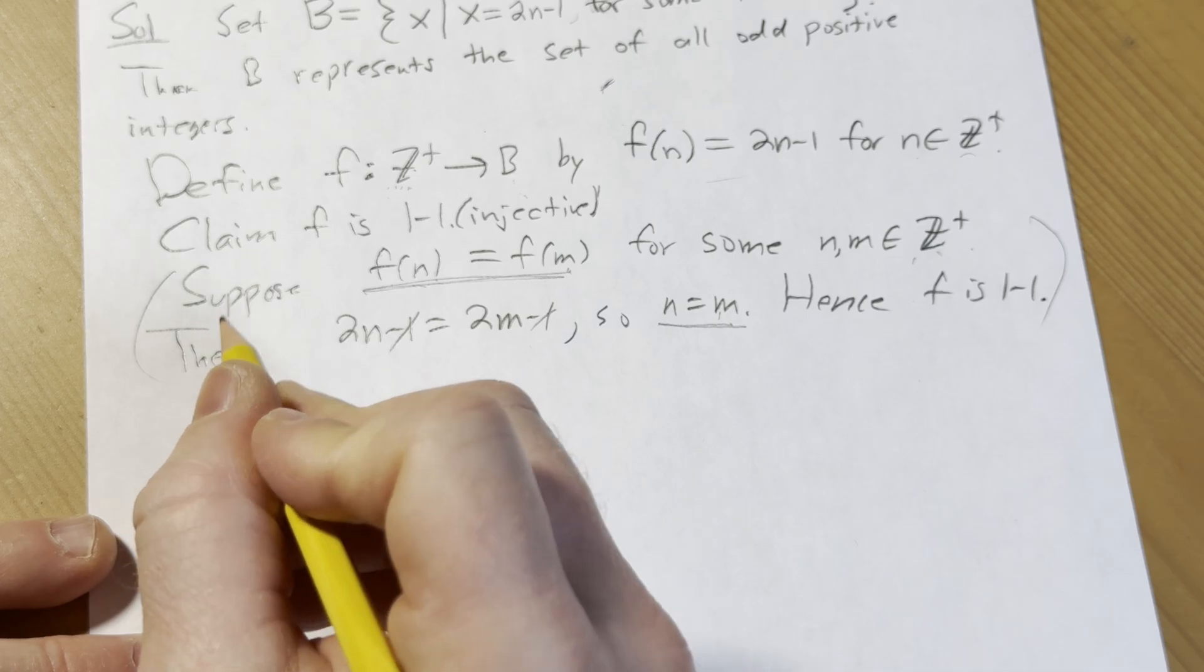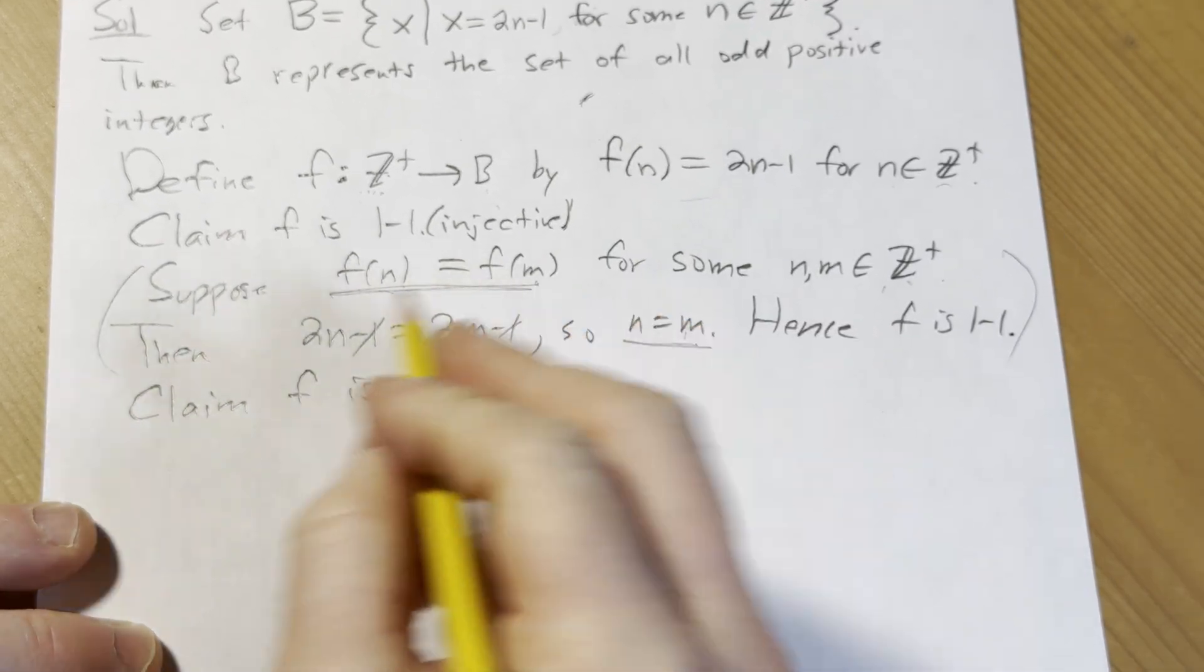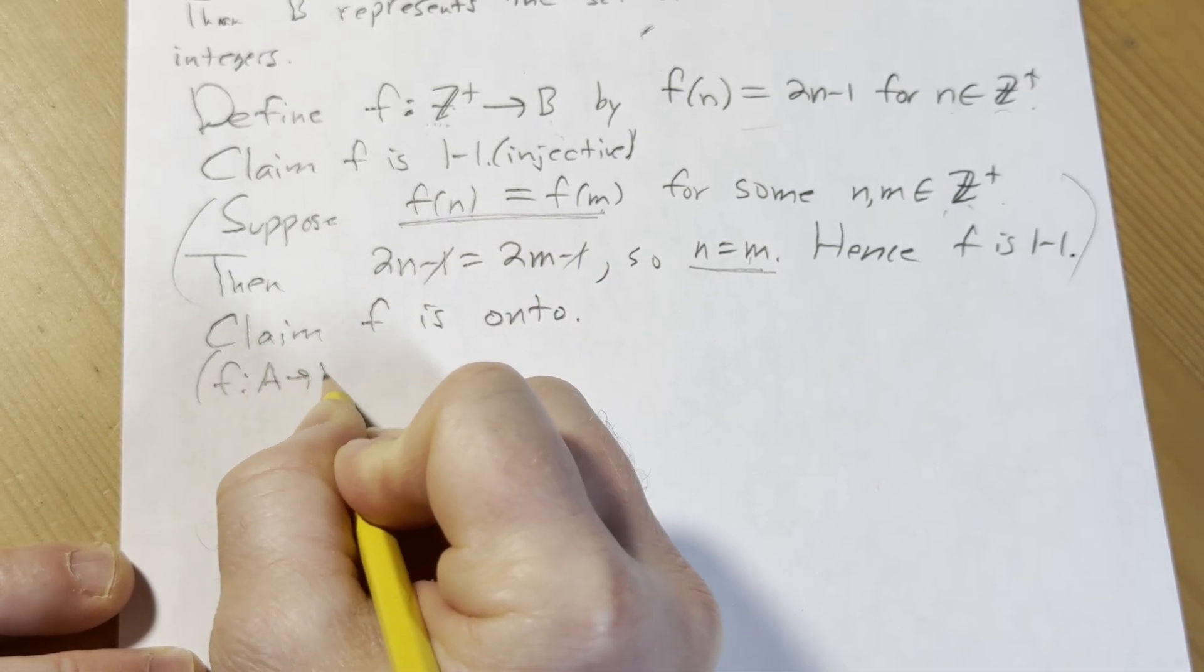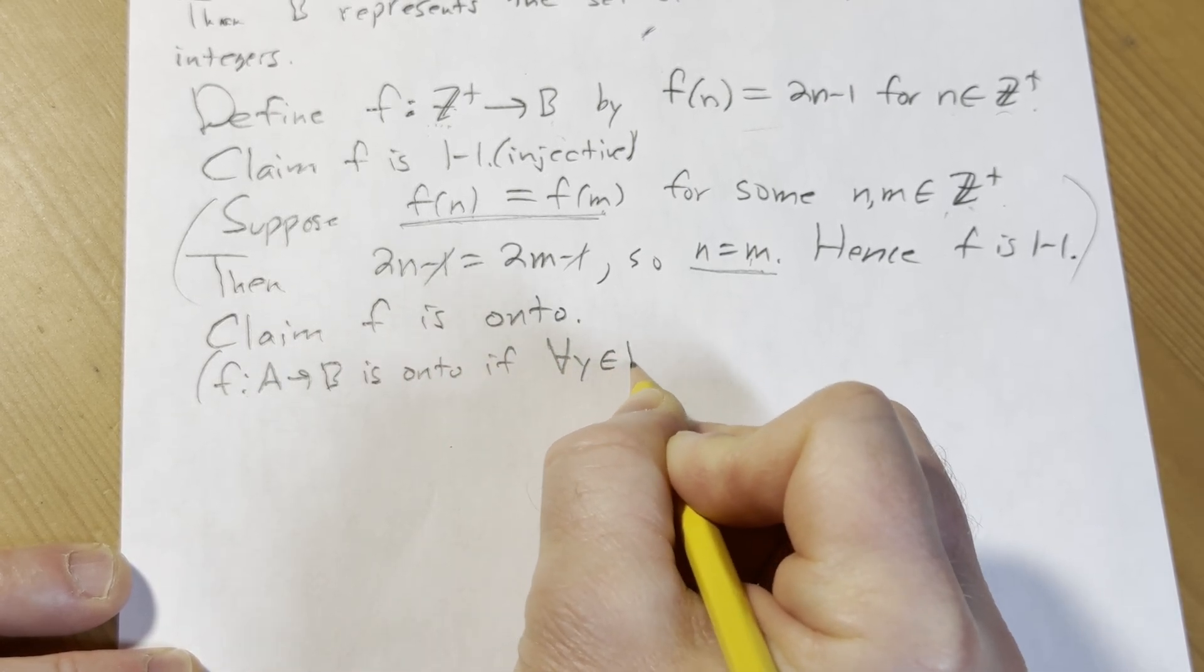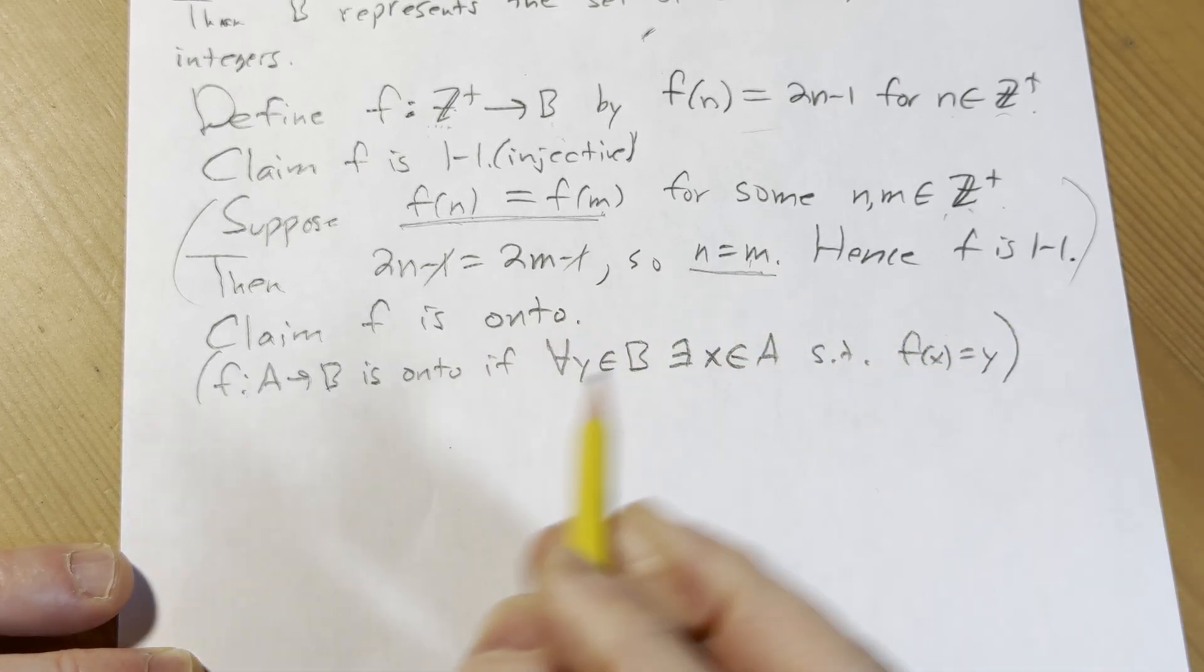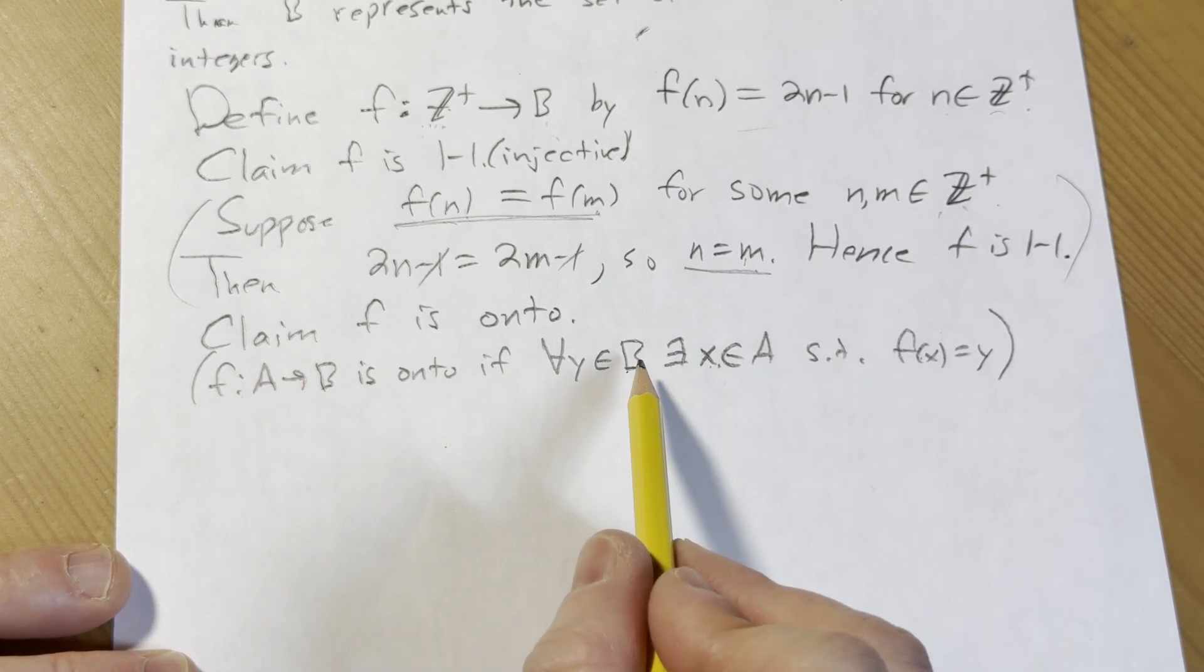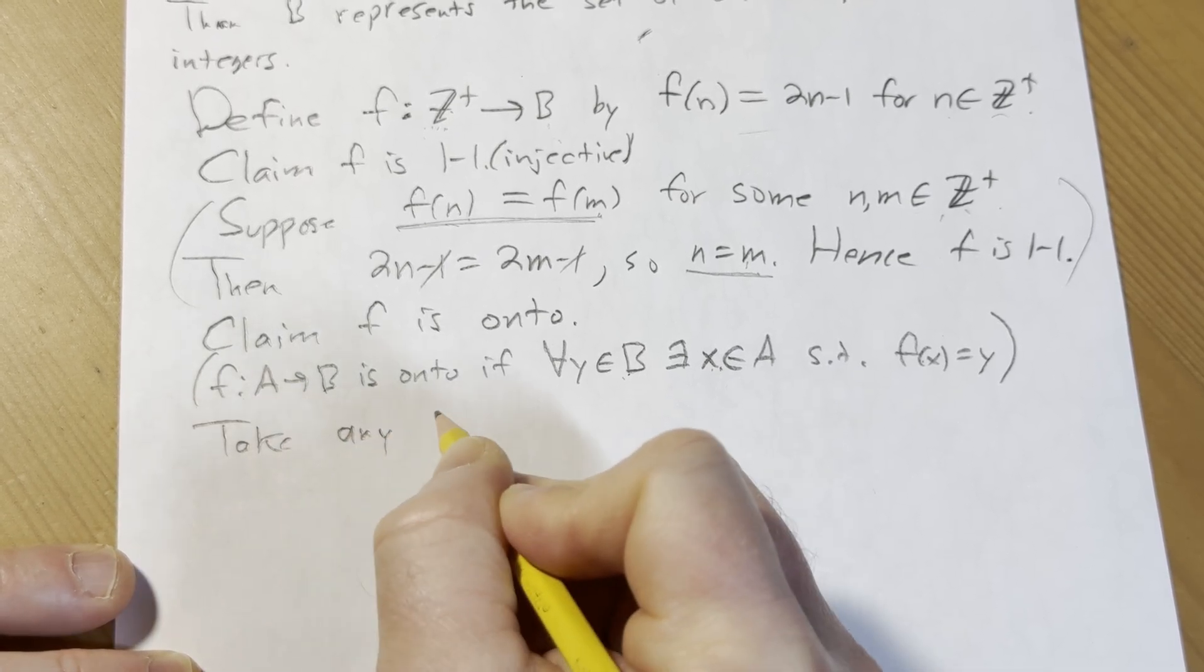Now we have to claim f is surjective or onto. So claim f is onto. I'm just going to briefly recall the definition of onto. You would say that f from A to B is onto if for all y in B there exists x in A such that f of x equals y. And that basically means intuitively, if you take a y in the codomain, you're always going to be able to find some x in the domain such that f sends x to y. So in this case, to prove this, we start by taking a y in the codomain, which is B. So take any y in B.